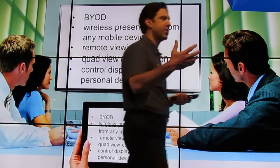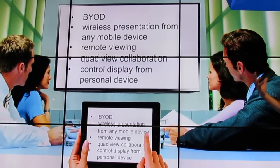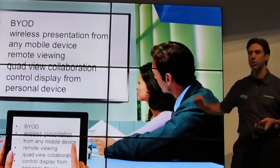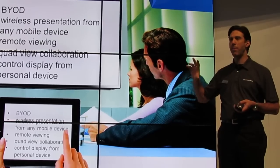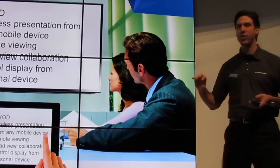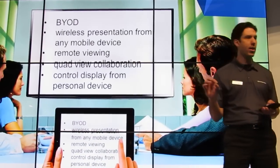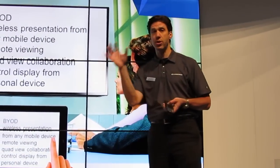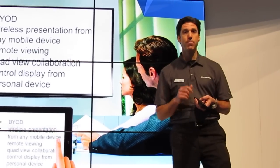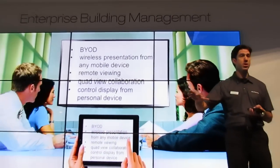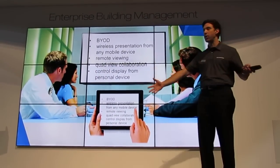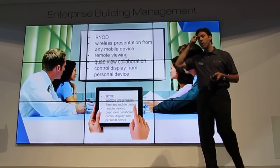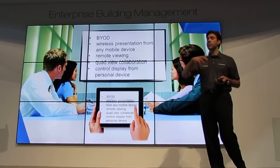So you bring in your own device, you're connected and presenting wirelessly. We're also going to talk about quad view collaboration and remote view in just a minute. But I also want to talk about built-in power control. If you happen to be using a Crestron-connected projector or display, AirMedia has built-in power control. When you start your presentation, it turns on the display; when you finish, it automatically turns off the display. There are about 1,000 Crestron-connected projectors and displays on the market today, from the most popular brands. Look for the Crestron-connected logo — it doesn't cost you anything extra, but it gives you some extra automation and control.